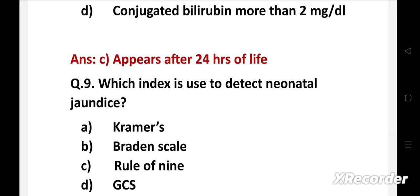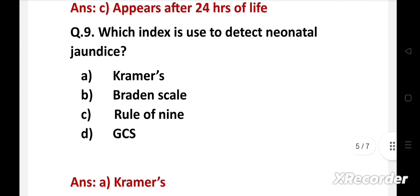Which index is used to detect neonatal jaundice? Option A Kramer's, B Braden scale, C rule of 9, D GCS. Right answer is option A, Kramer's. Kramer's rule or index is used to detect neonatal jaundice. Braden scale is used for pressure ulcer risk, and rule of 9 is used for estimation of total body surface area, and Glasgow Coma Scale or GCS scale is used to assess the level of consciousness of patients.